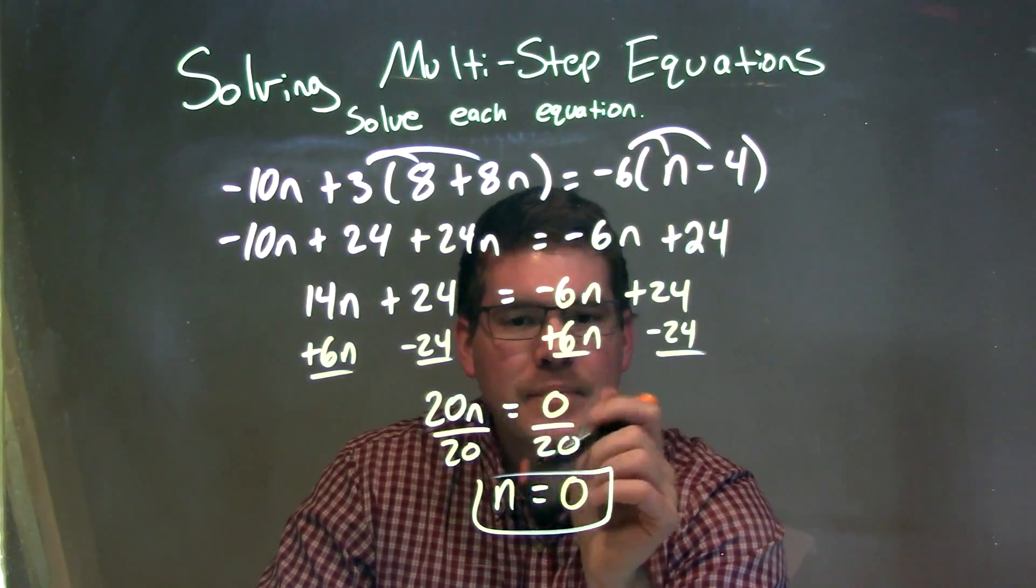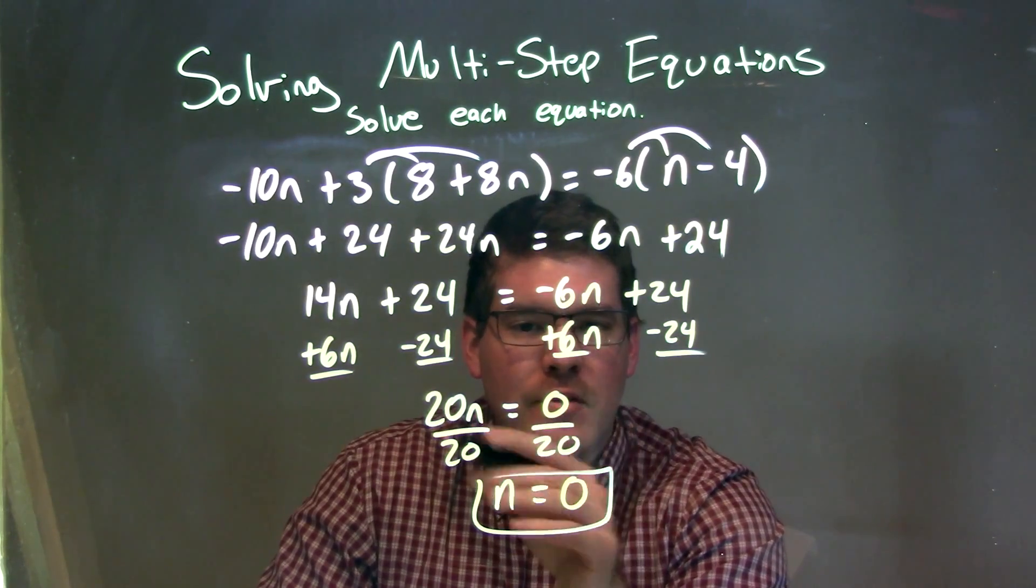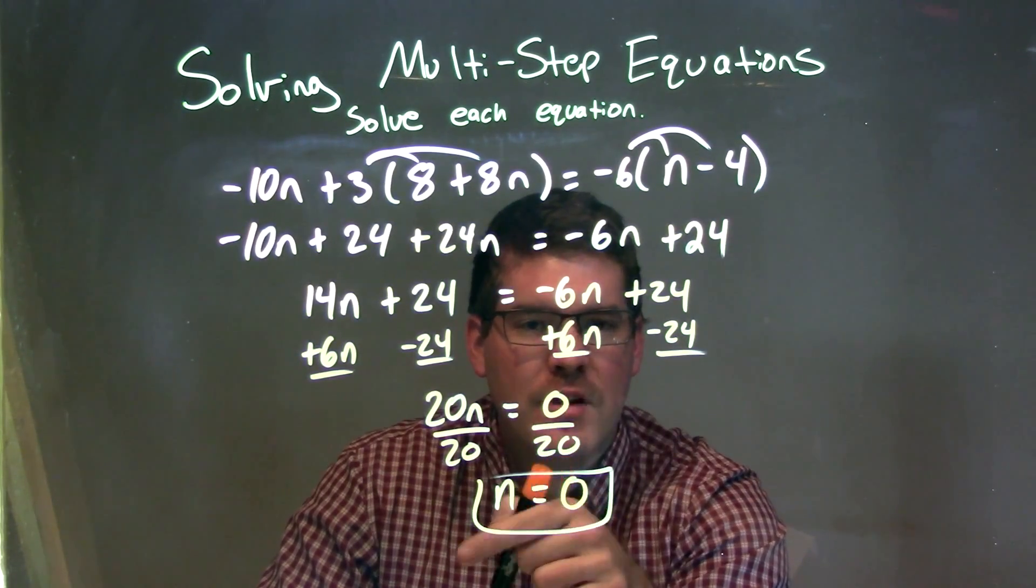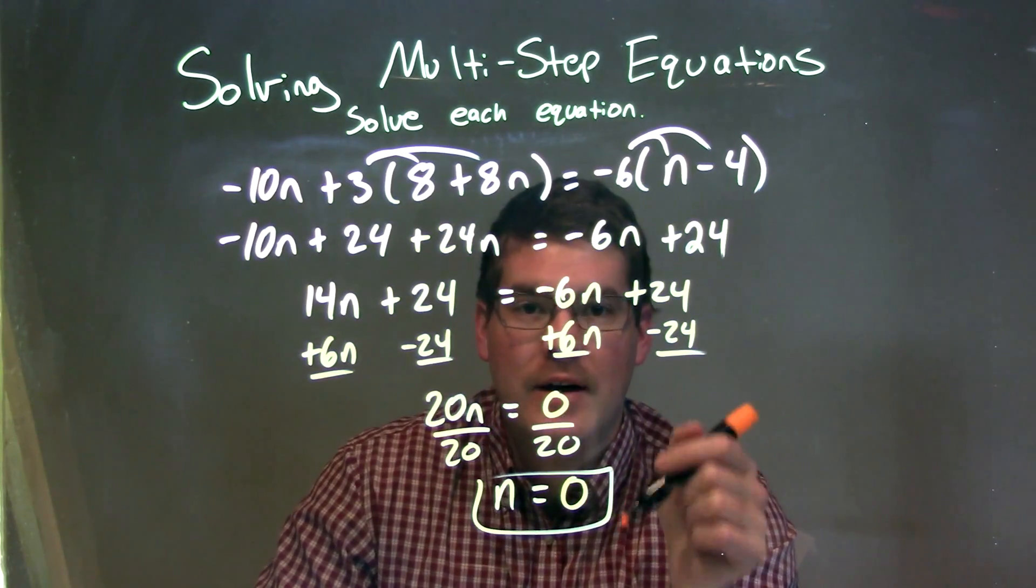Okay, now everything kind of canceled out. So now we're left with 20n = 0, divide by 20 on both sides. We've got n by itself. And so n = 0 is my final answer.